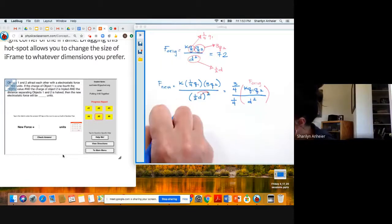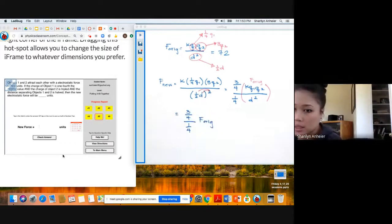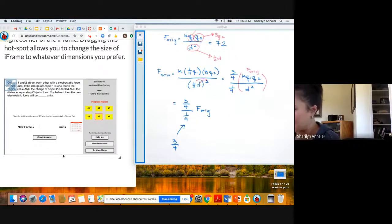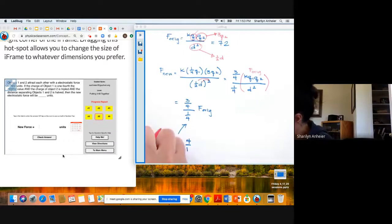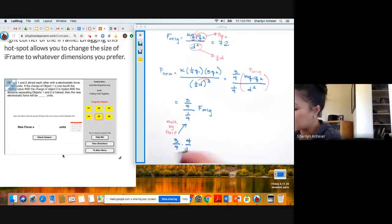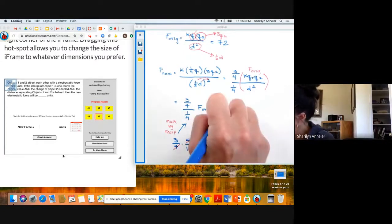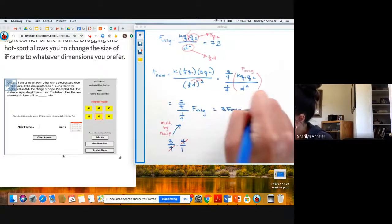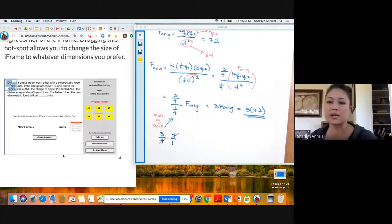So first, before I do that, I have three-fourths over one-fourth times F original. And this is really ugly. So to simplify that, I'll have to multiply by the reciprocal. So anytime you have a fraction within a fraction, you multiply by reciprocal. And then what's nice is that I can actually cancel things out and I end up with twelve times F original, which I know is 72. And then you guys can do this next calculation for your answer.